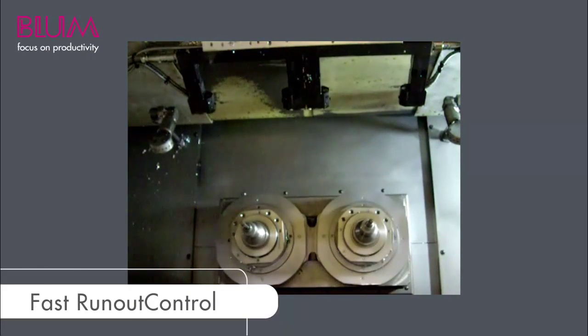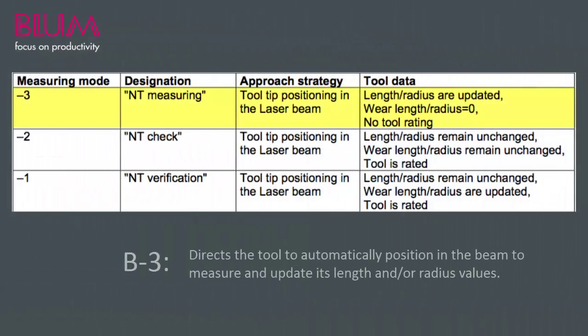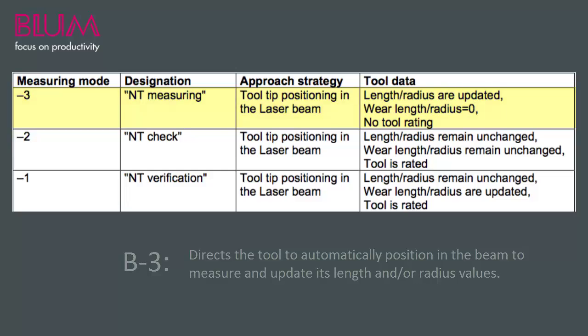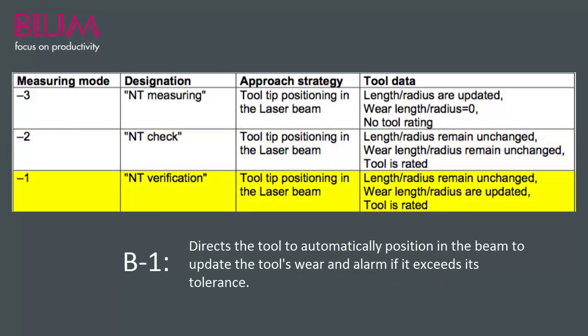Let's look at each one individually as shown in the laser manual. B negative 3 will automatically position the tip of the tool into the beam and record the length and/or radius values of the tool. B negative 2 will automatically position the tip of the tool into the beam and check if the tool's wear has exceeded its set tolerance — a pass or fail type of test.